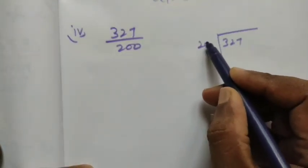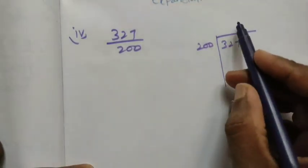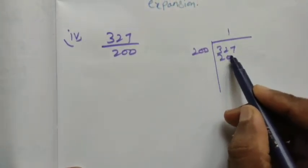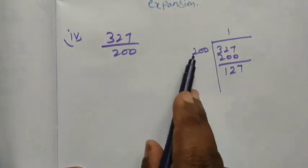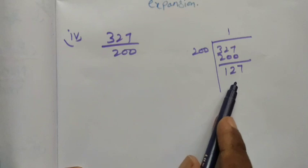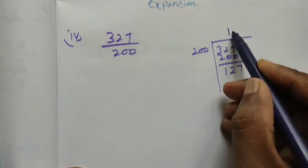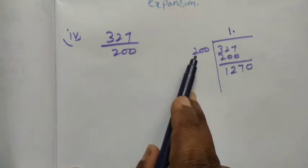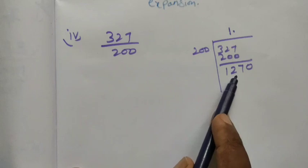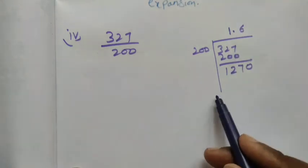So here, 1 goes in 6 times. 1 times 200 is 200, subtract to get 127. Bring down next digit...